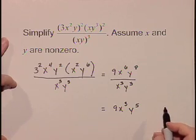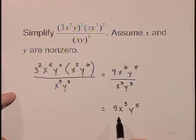So simplifying our original expression our answer is 9x cubed y to the fifth.